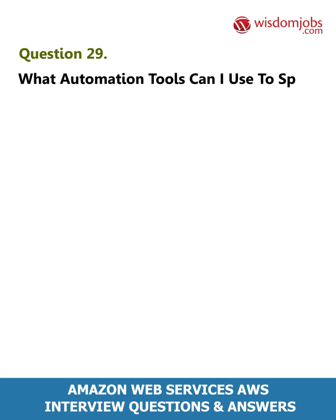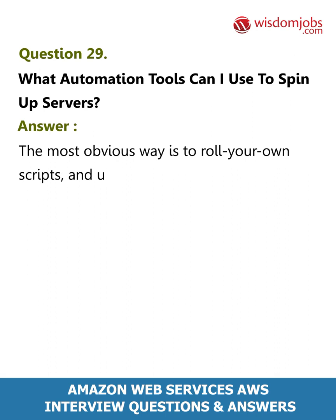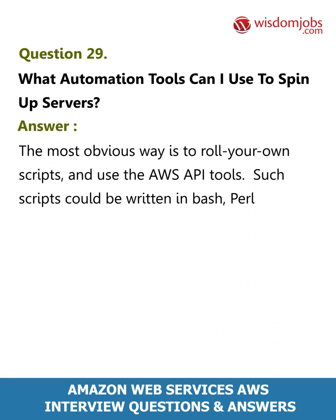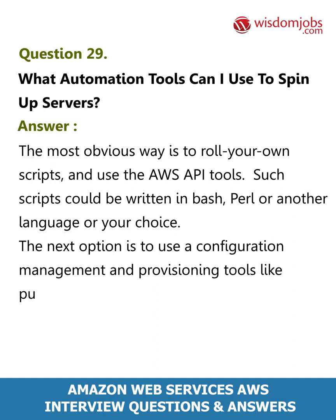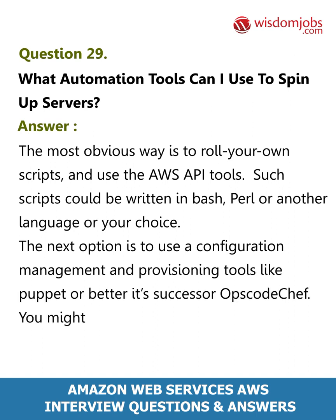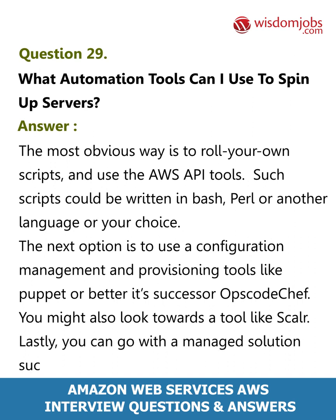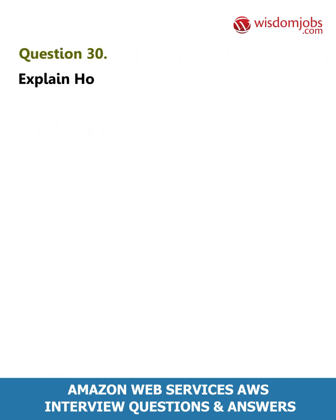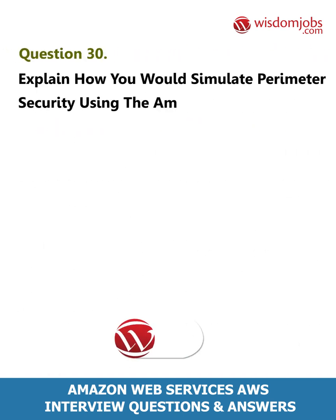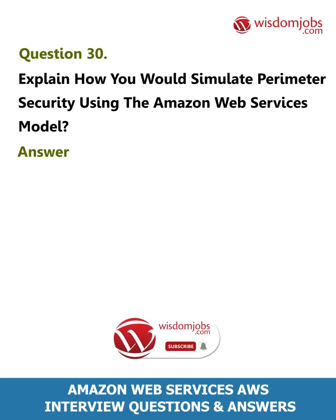Question 29: What automation tools can I use to spin up servers? Answer: The most obvious way is to roll your own scripts and use the AWS API tools — such scripts could be written in Bash, Perl, or another language of your choice. The next option is to use configuration management and provisioning tools like Puppet, or its successor OpsCode Chef. You might also look towards a tool like ScaleR. Lastly, you can go with a managed solution such as RightScale.